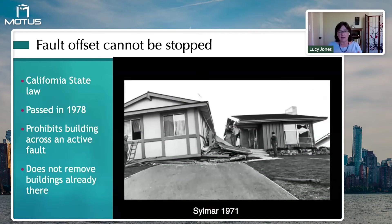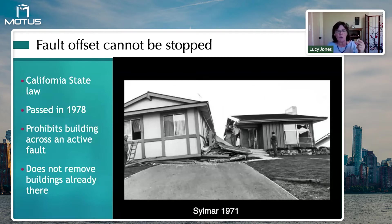Almost all of our damage is happening from what scientists call a secondary effect — the shaking that travels out from the earthquake and shakes our houses. Just like when I snap my fingers, I'm moving two surfaces past each other with frictional resistance; I overcome the friction and release energy in the form of a sound wave.